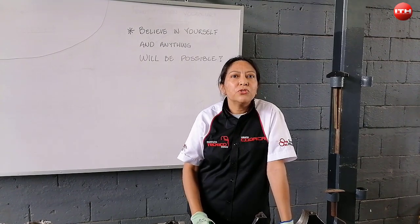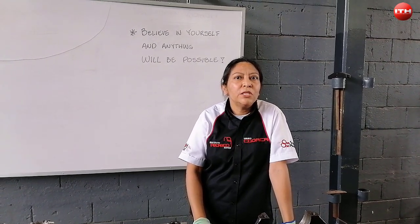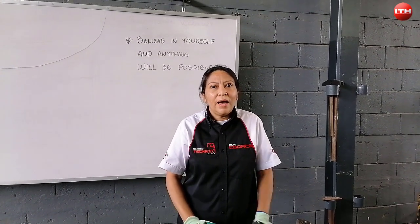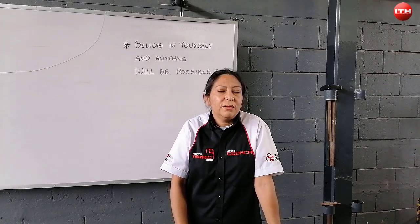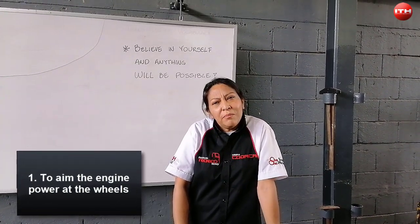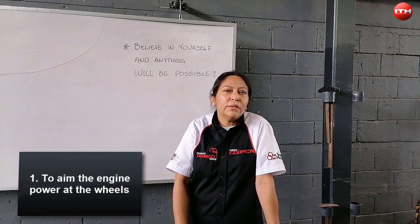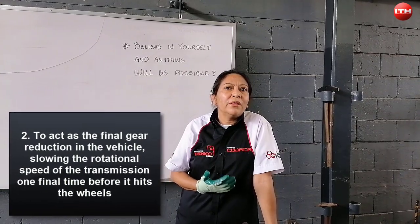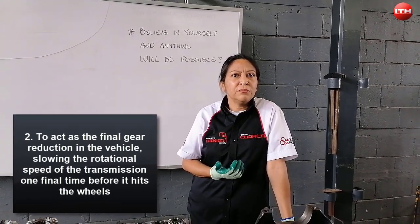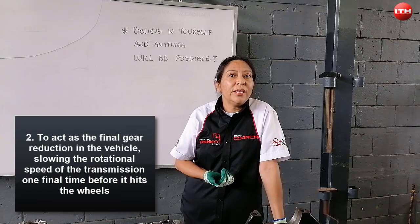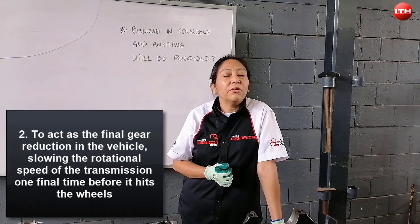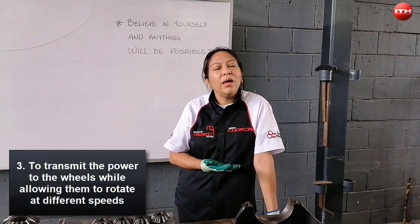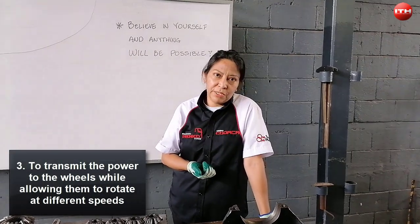This function provides proportional revolutions per minute between the left and the right wheels. The differential has three important jobs. Number one is to aim the engine power at the wheels. Number two is to act as a final gear reduction in the vehicle, slowing the rotational speed of the transmission one final time before it hits the wheels. And number three is to transmit the power to the wheels while allowing them to rotate at different speeds.